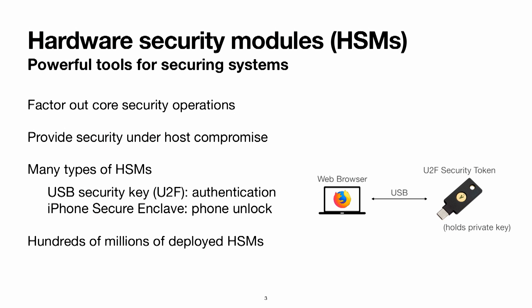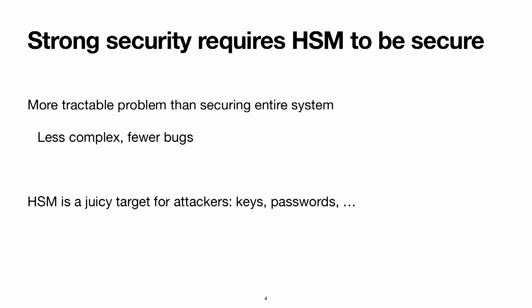This idea shows up in many places. The simplest example is two-factor authentication using a USB security key. The same idea appears in smartphones: iPhones and Android phones have a separate chip called a security enclave that manages device unlocking, so that even if there are bugs in the Android operating system itself, they won't lead to your phone being unlocked without the right pin code.